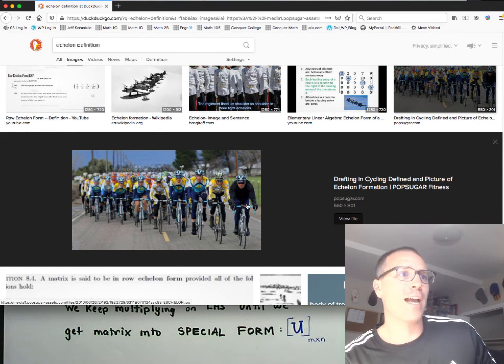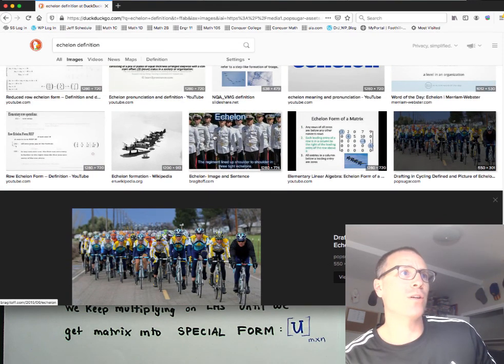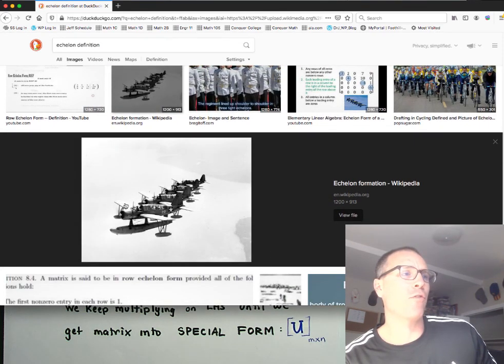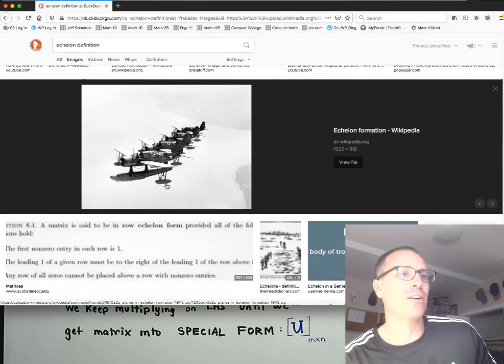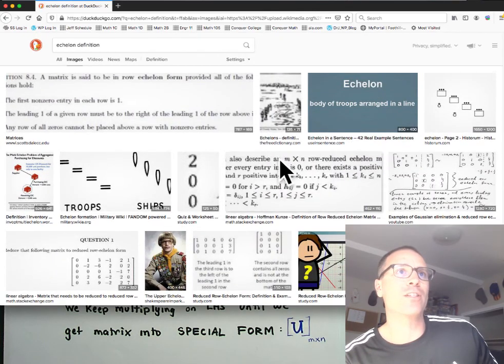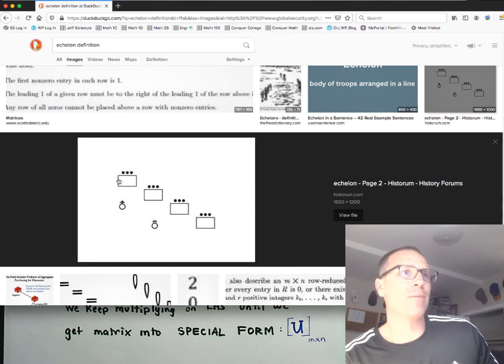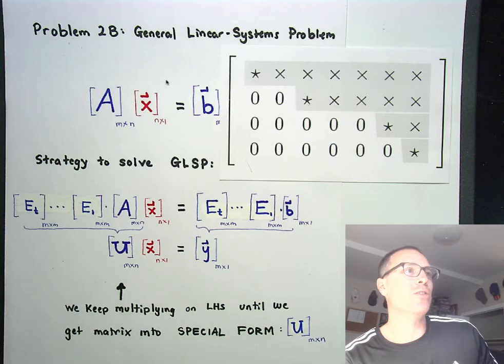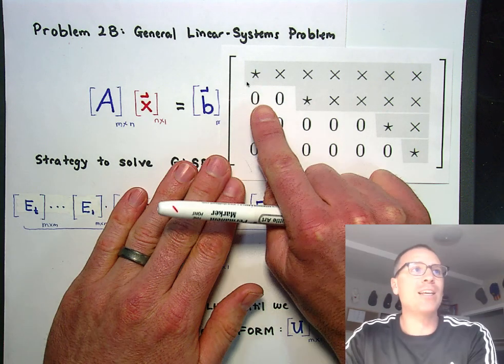Check this out. These bikers are in echelon form. They kind of step backwards. These airplanes are in echelon form. They kind of fly in that stair step process. And then there's some nice little demonstrations of echelon form for troop formation.